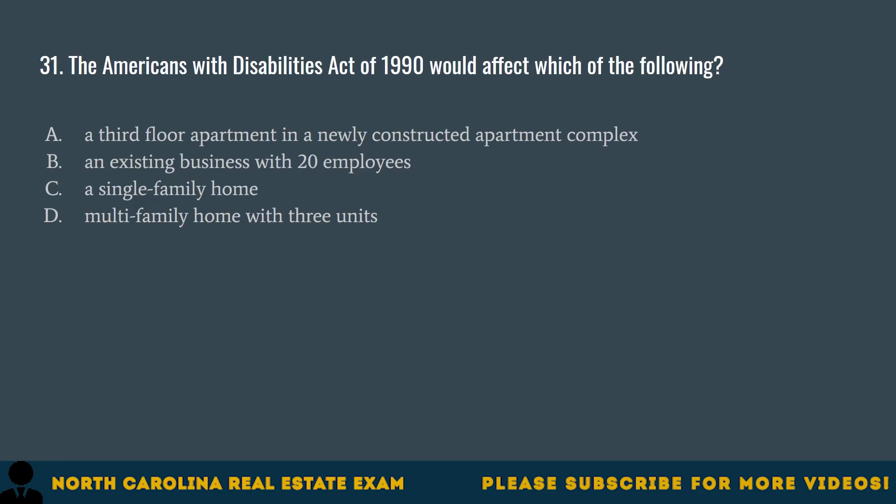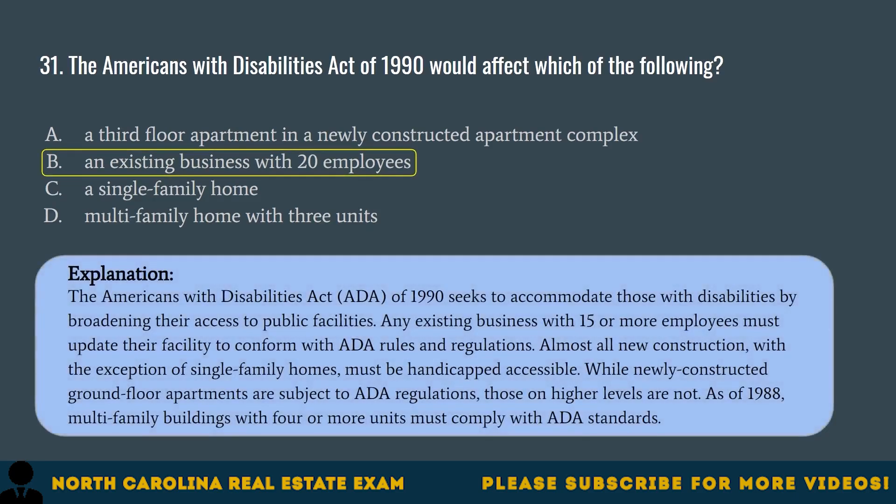Question 31. The Americans with Disabilities Act of 1990 would affect which of the following? A. A third-floor apartment in a newly constructed apartment complex. B. An existing business with 20 employees. C. A single-family home. D. A multifamily home with three units. The correct answer is B. An existing business with 20 employees. The ADA of 1990 seeks to accommodate those with disabilities by broadening their access to public facilities. Any existing business with 15 or more employees must update their facility to conform with ADA rules. Almost all new construction, with the exception of single-family homes, must be handicapped accessible. Newly constructed ground-floor apartments are subject to ADA regulations, but those on higher levels are not. As of 1988, multifamily buildings with four or more units must comply with ADA standards.